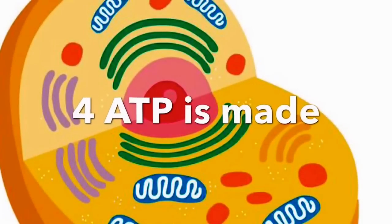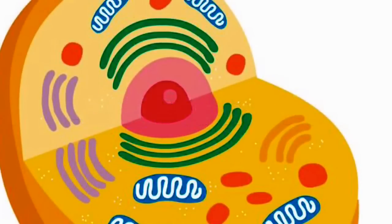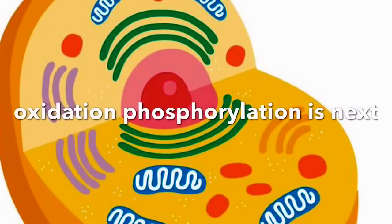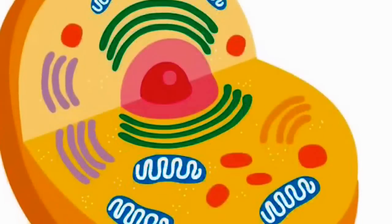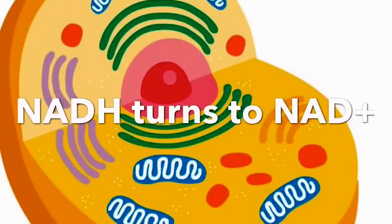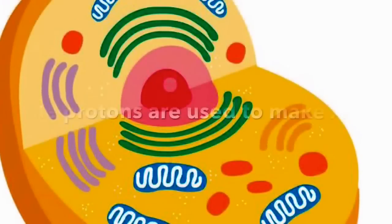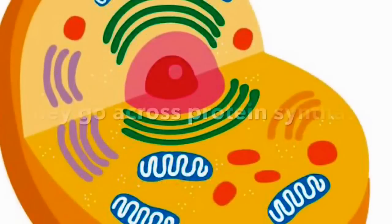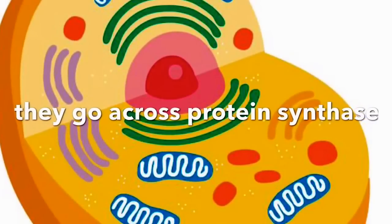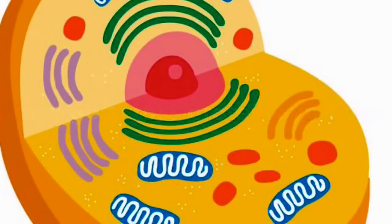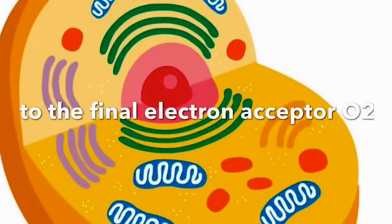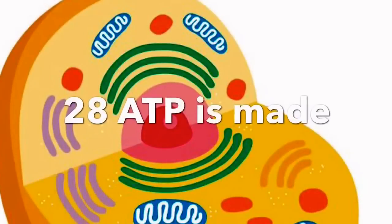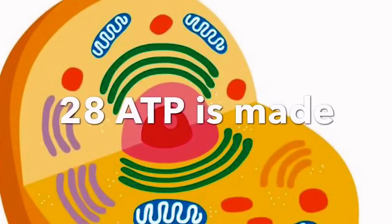4 ATP is the main gain from the Krebs cycle. Oxidative phosphorylation is next — NADH charges the NAD+, and the protons are used to make ATP. They go across ATP synthase to the final electron acceptor, O2. 28 ATPs are made.